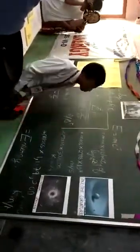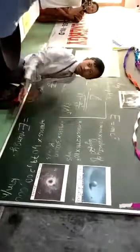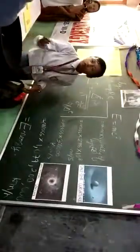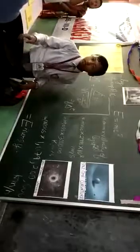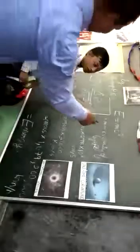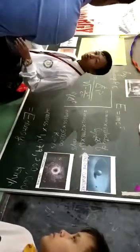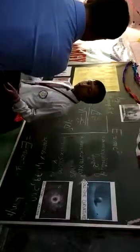What Einstein emphasized with this equation was that in order for anything to move at the speed of light, it must first be converted into energy. Anything that moves at the speed of light is energy, because in order to move at the speed of light, an object must have absolute zero mass, and energy has absolute zero mass. Neutrinos are objects which can move at the speed of light because they have close to zero mass.